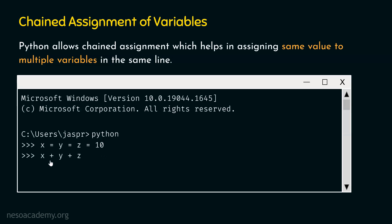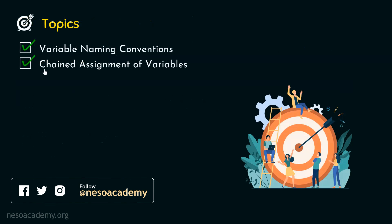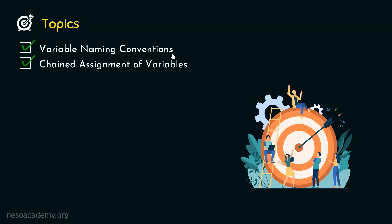If we type x + y + z and hit enter, we will get 30 as a result because all three variables point to the value 10. So if the requirement is to assign the same value to multiple variables, we can use Python's chained assignment feature. We have now covered both topics: variable naming conventions — including camel case, pascal case, and snake case — and chained assignment of variables, which allows assigning the same value to multiple variables in one line.